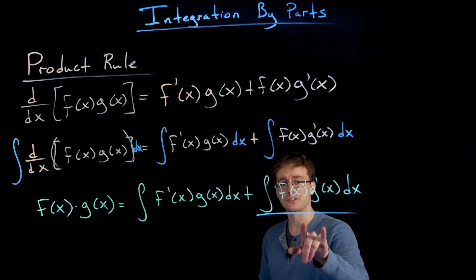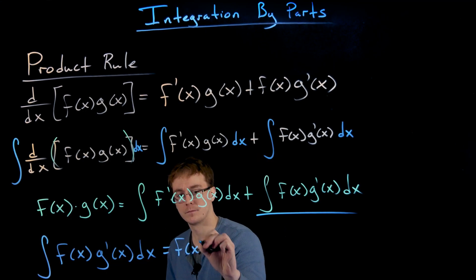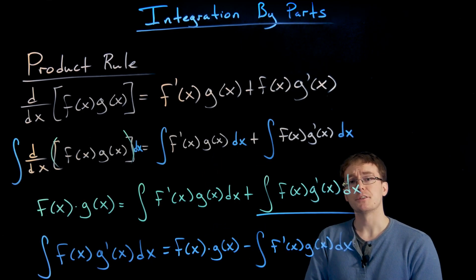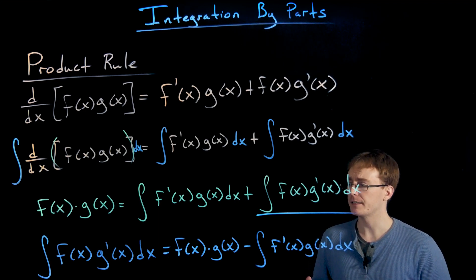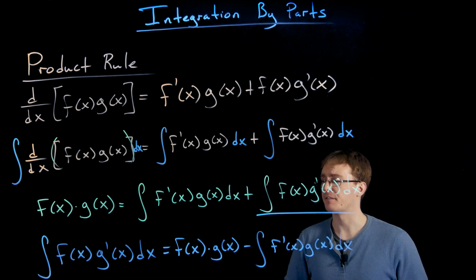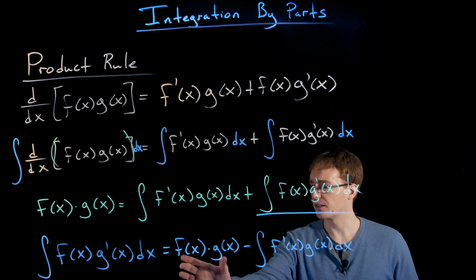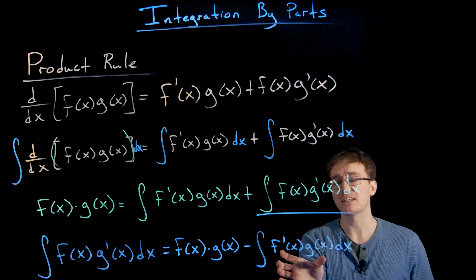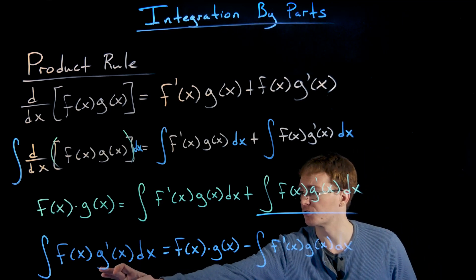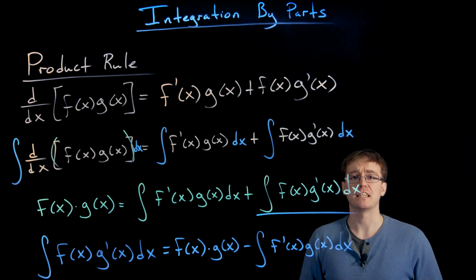This allows us to rewrite the integral of f times g prime. The idea is we start with a product inside our integral, and according to our integration by parts formula we find the other pieces — the function f and g — and evaluate the integral of f prime times g instead of our original integral of f times g prime. The hope is that this switch gives us a simpler integral we can actually evaluate.